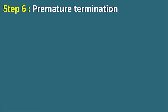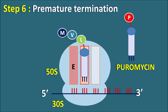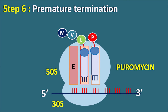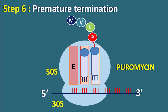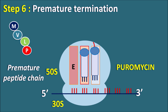Step six is premature termination. Puromycin is a drug that acts like a stop codon, having structural similarity to tRNA. When puromycin attaches to the A site, it acts like a stop codon. The peptide chain on the P site is transported to the puromycin and forms a peptide linkage, but since puromycin acts as a stop codon, the peptide chain immediately detaches from the A site, releasing a premature peptide chain that does not have the properties of a protein, thereby inhibiting protein synthesis.